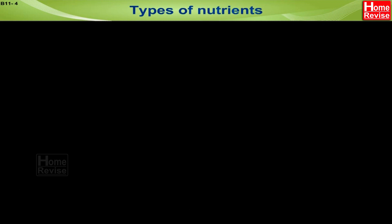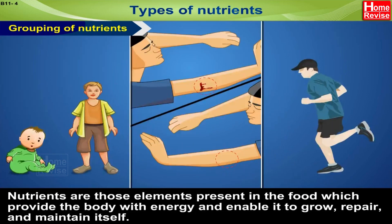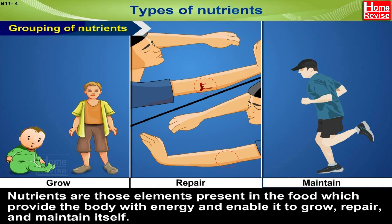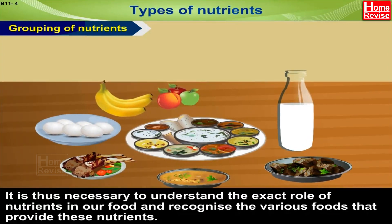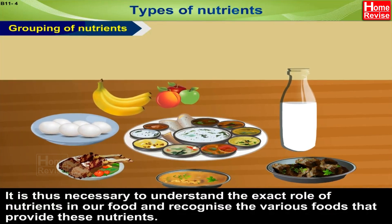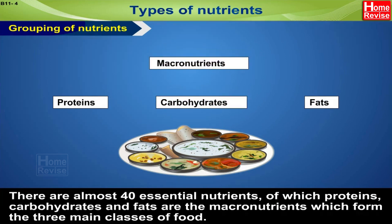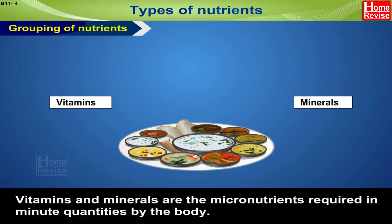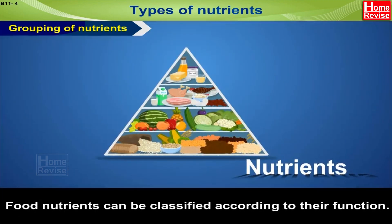Types of nutrients — grouping of nutrients. Nutrients are those elements present in food which provide the body with energy and enable it to grow, repair, and maintain itself. It is necessary to understand the exact role of nutrients in our food and recognize the various foods that provide these nutrients. There are almost 40 essential nutrients. Proteins, carbohydrates, and fats are the macronutrients, forming the three main classes of food. Vitamins and minerals are the micronutrients required in minute quantities by the body. Food nutrients can be classified according to their function.